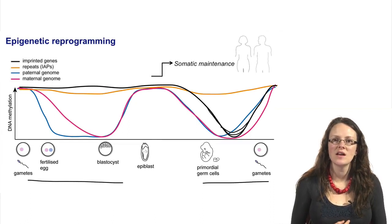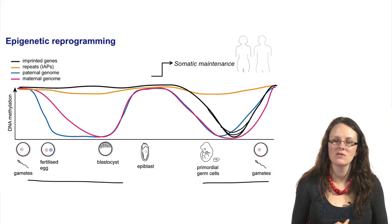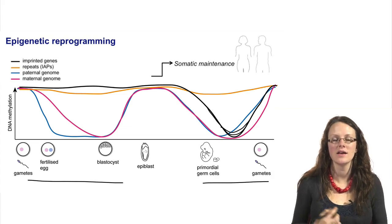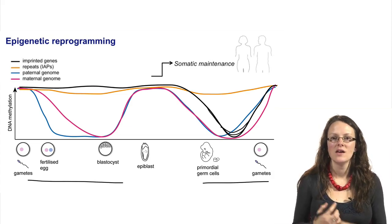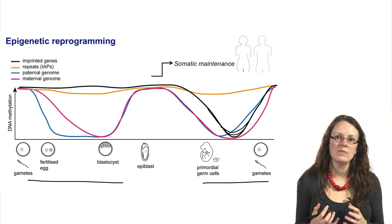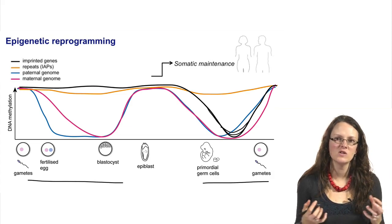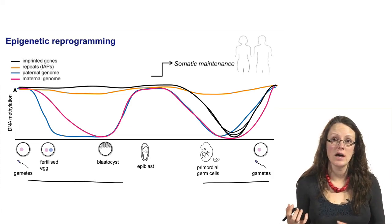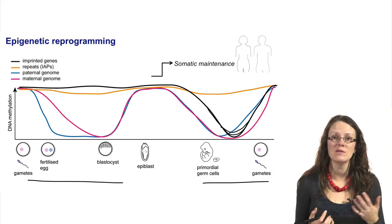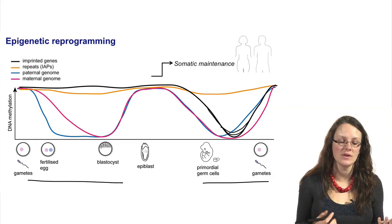So what happens at alleles that are due to an IAP insertion? AVY and Axin fused both have an IAP inserted into them. Do they behave like any other allele, or do they behave like an IAP?